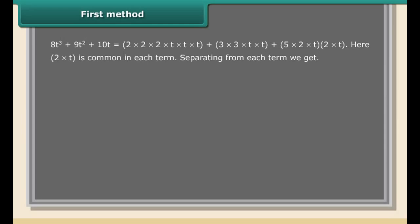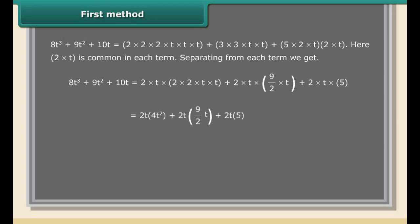Another method is by dividing each term in the numerator by the given monomial. For example, consider the division of the trinomial 8t³ + 9t² + 10t by the monomial 2t. First method: 8t³ + 9t² + 10t = 2×2×2×t×t×t + 3×3×t×t + 5×2×t. Here 2t is common in each term.